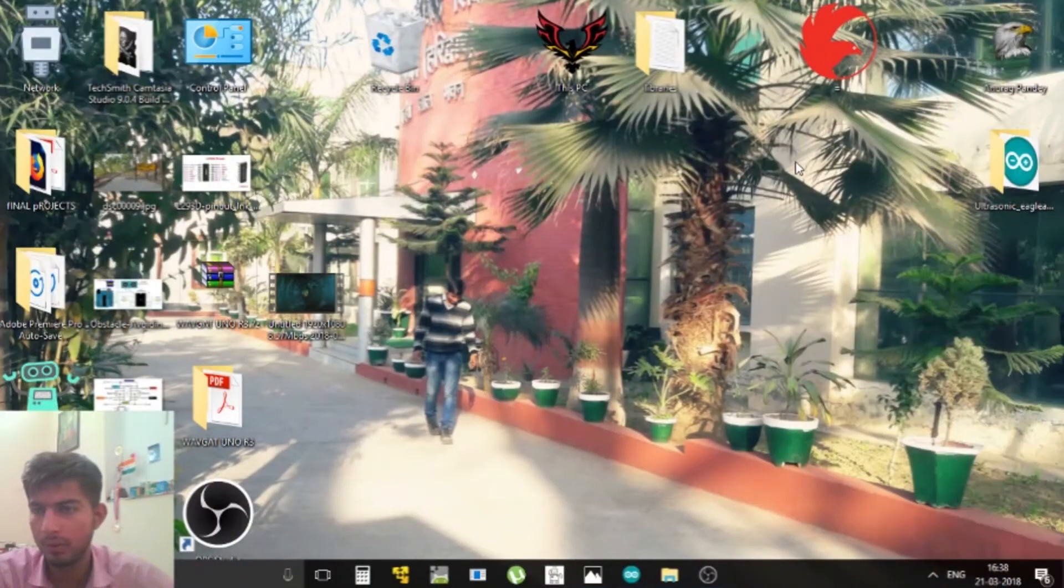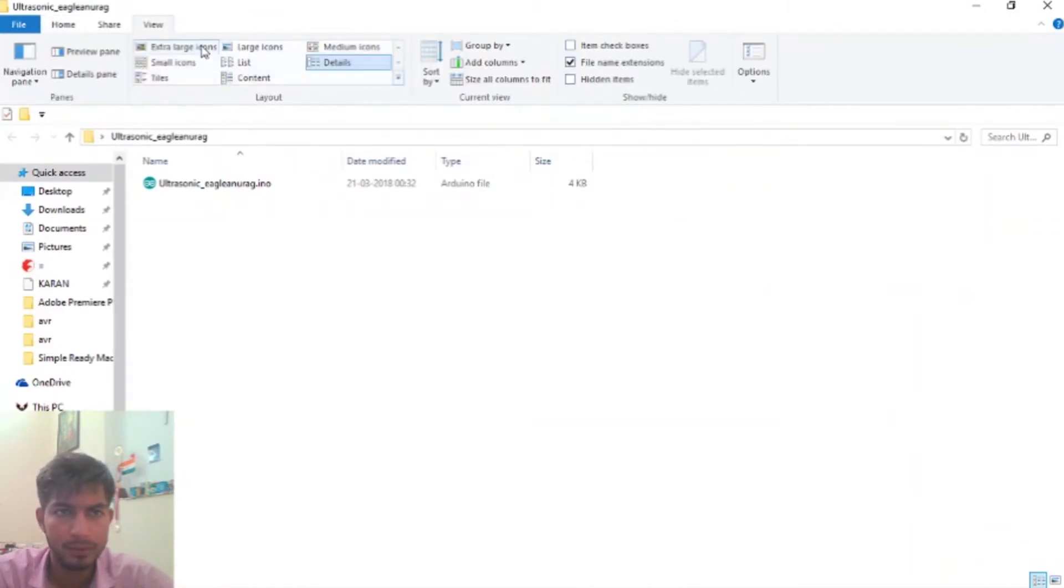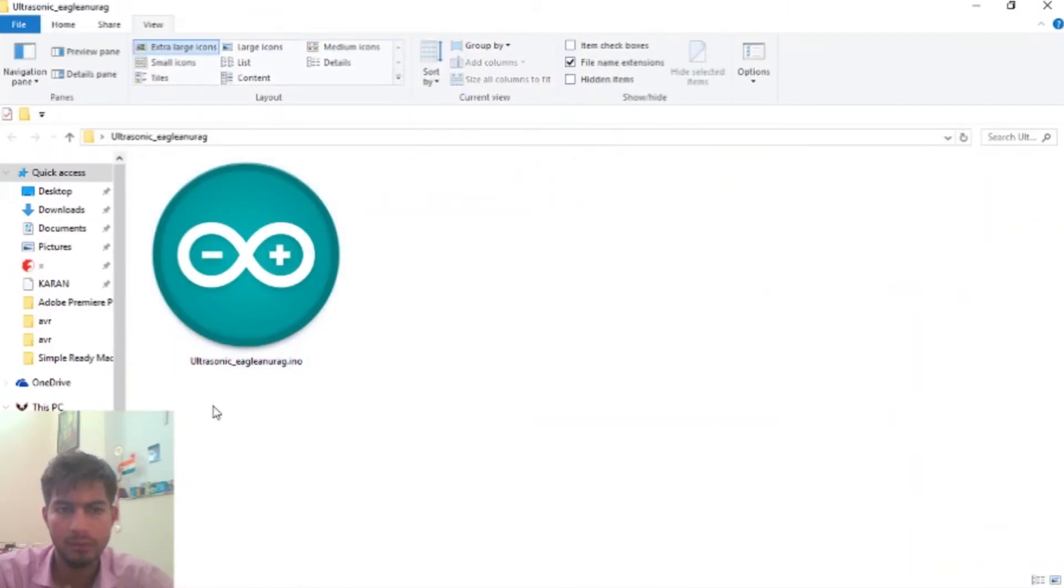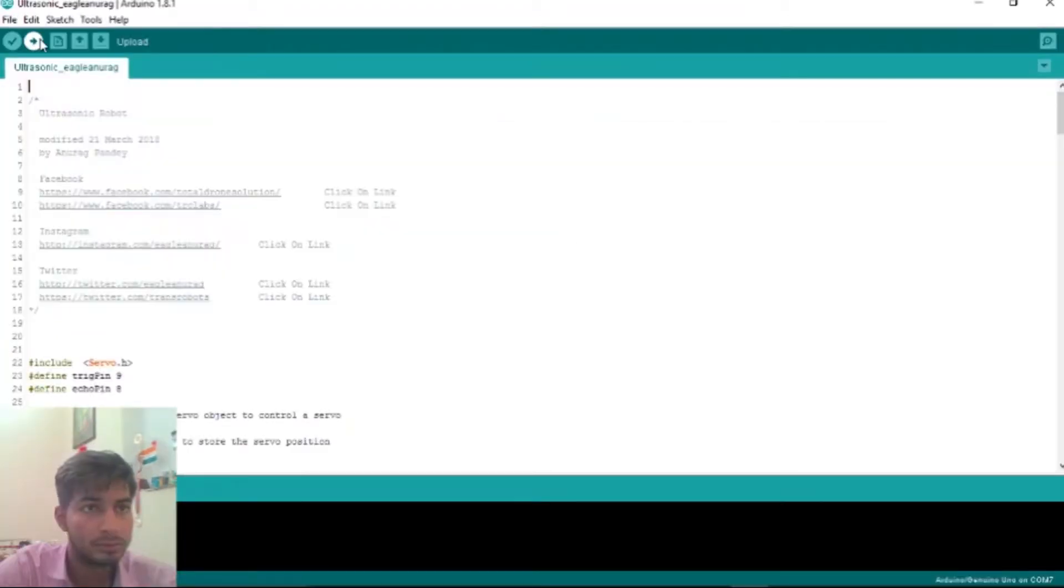Just open the Arduino software, then go to the sketch file. This is the program I have written. Then open it, just double-click on it. The Arduino software will open. This is the code, it looks good finally.